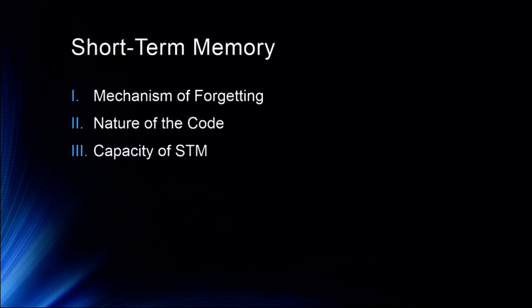We'll first talk about the mechanism of forgetting — how information gets lost from short-term memory. Then we'll talk about the nature of the code: how is information encoded in short-term memory? Is it auditory? Is it visual? And finally, we'll talk about the capacity of short-term memory.